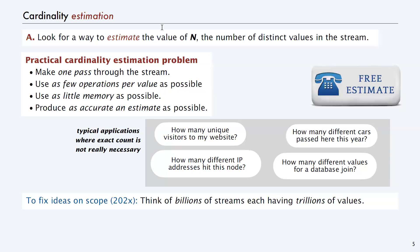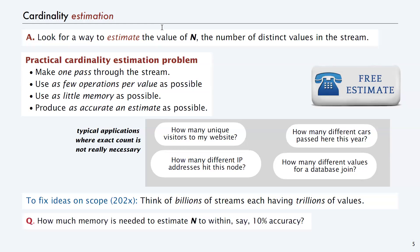To fix ideas on the scope: let's say you've got billions of streams, each one having trillions of values. You can only afford to touch the values a little bit, and you can't have that much memory because you've got billions times the amount of memory - maybe one per customer if you're Visa or something. The basic question is: how much memory do you need to estimate the number of distinct values, say, to within 10% accuracy? The answer is really surprising - much less than you might think.